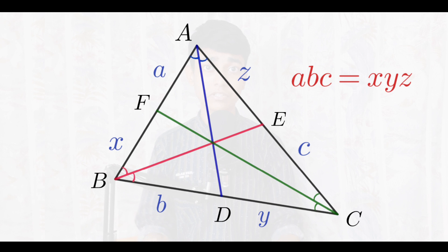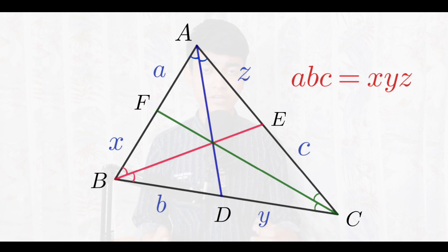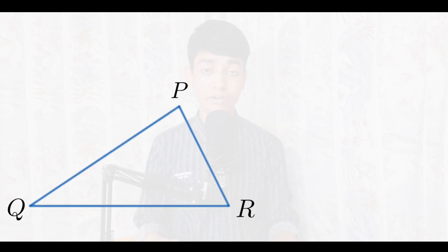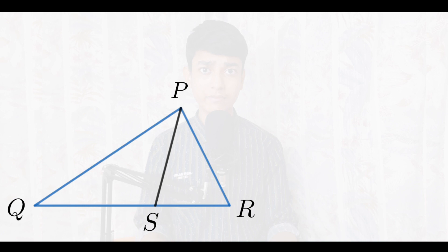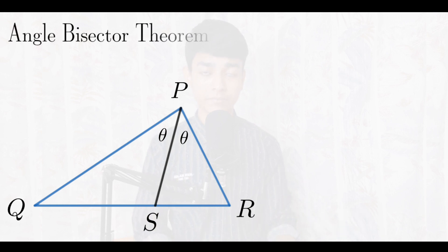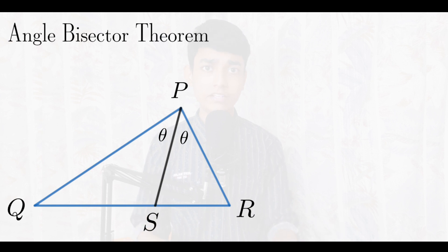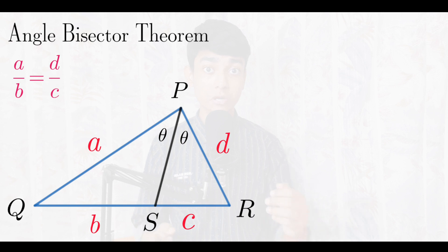Now let us see how we can prove this theorem. Before we move on to the actual solution, let us discuss a simpler theorem. Suppose you have a triangle PQR and you draw segment PS such that it is the angle bisector for angle P. Hence these two angles would be equal, let them be equal to theta. When an angle bisector is drawn in a triangle, there is a theorem known as the angle bisector theorem. It states a beautiful relation between the sides. Let the side lengths of triangle PQR be a, b, c, and d. The angle bisector theorem states that a over b equals d over c.